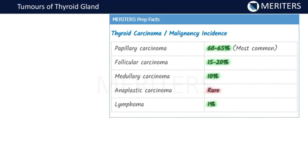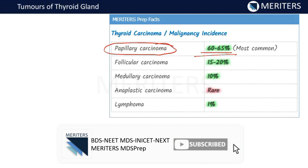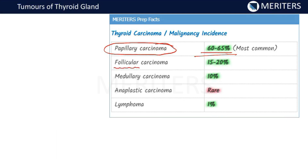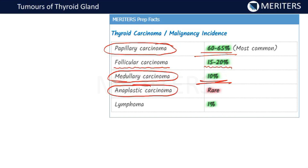The most common type is papillary carcinoma — a very frequently asked question in exams — at 60 to 65%. The second most common is follicular carcinoma at 15 to 20%. Third is medullary carcinoma at 10%. Then anaplastic carcinoma, which is very rare. Lymphoma is around 1%. The most frequently asked questions are which is the most common and which is the least common — anaplastic is the rare variety, papillary is the most common.